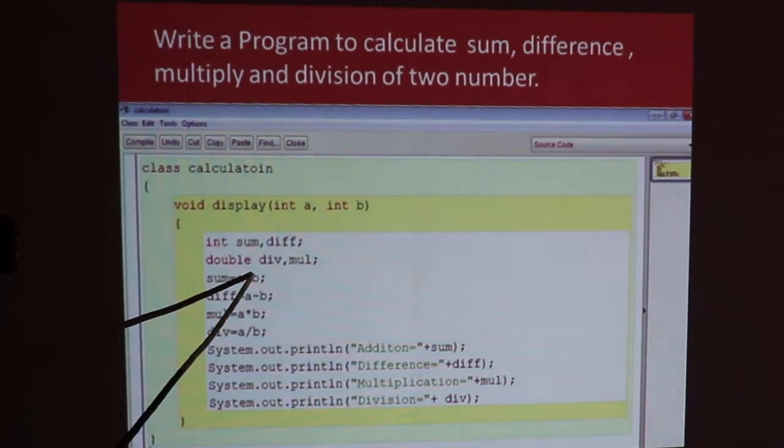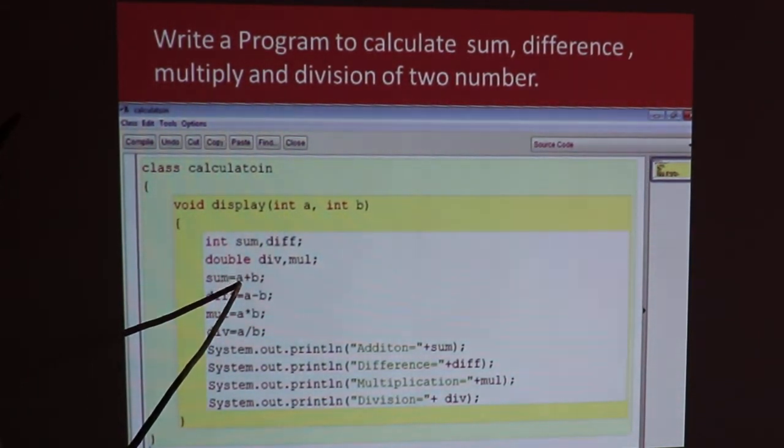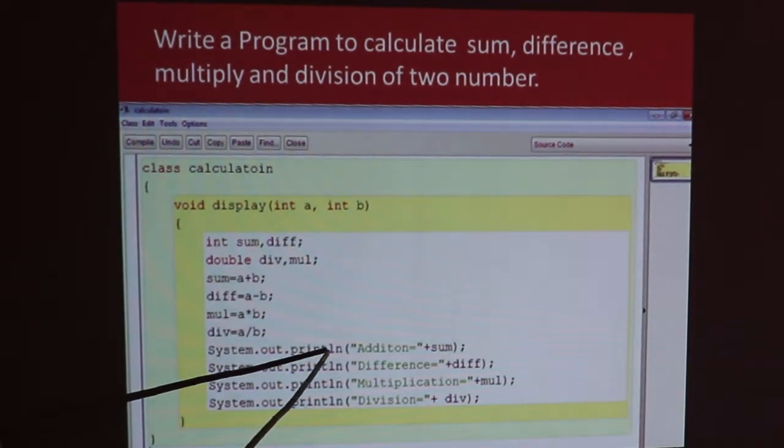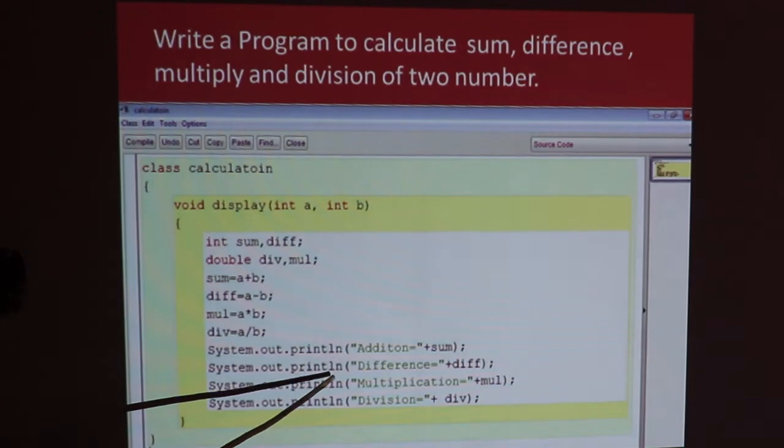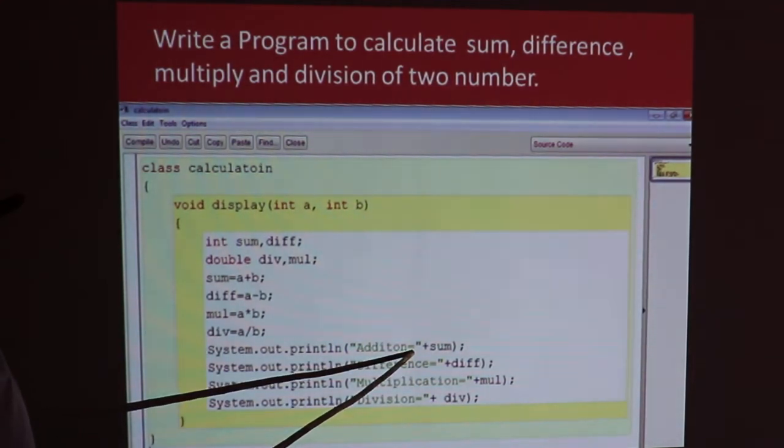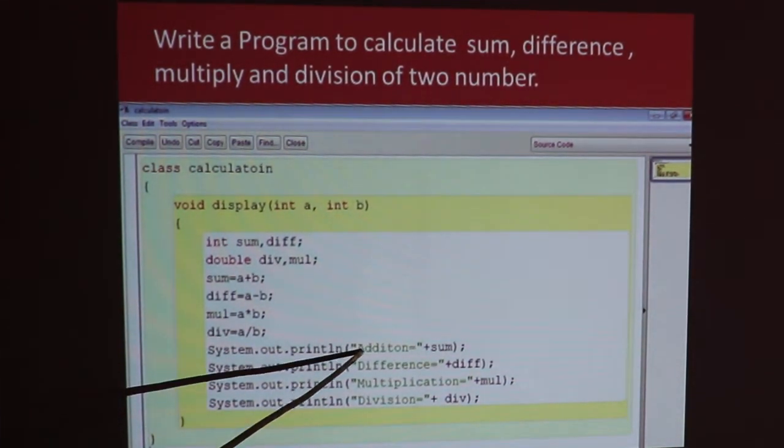Sum is equal to a plus b, so the numbers you have passed in the parameter, the sum will be calculated. Then difference is equal to a minus b. The difference will be stored. Then multiply the numbers, and then divide the numbers. Addition is equal to sum, so you have to write everything in the output statements.